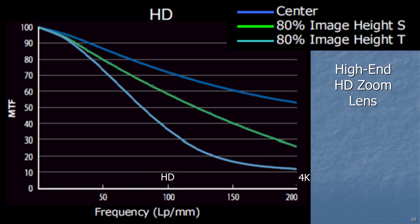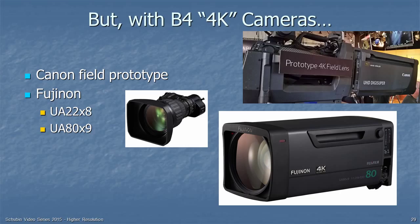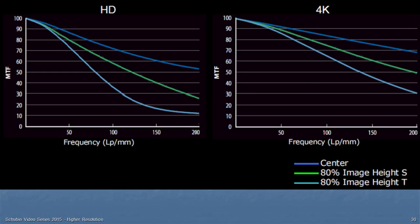Unfortunately, those two-thirds-inch lenses are designed for HD or less. Here's a very high-end HD zoom lens and its modulation transfer function at 100 line pairs per millimeter — the middle of the chart is HD resolution, and it's not so good, especially at 80% of the image height. But with new B4 4K cameras, both Canon and Fujinon are introducing 4K lenses. A comparison of the MTF between the HD lens and the 4K lens shows that the 4K lens will make pictures look substantially sharper, even if used on a high-definition camera. That's pretty exciting news.